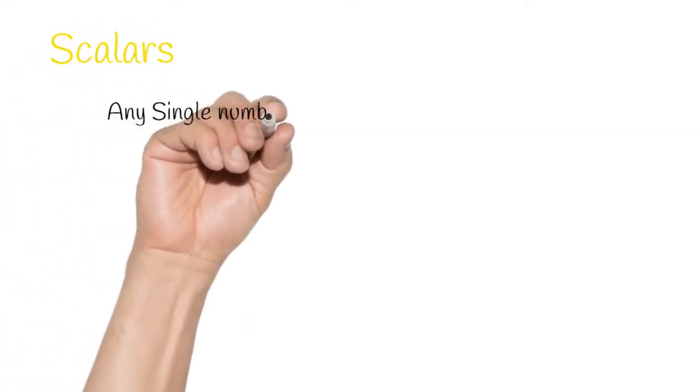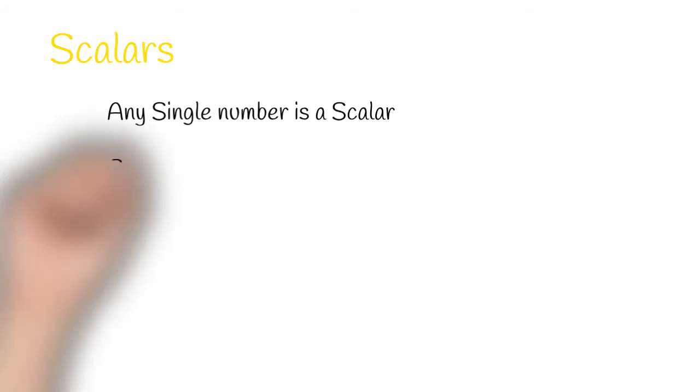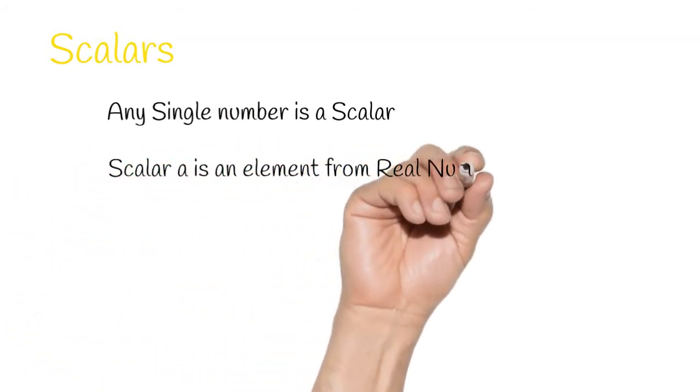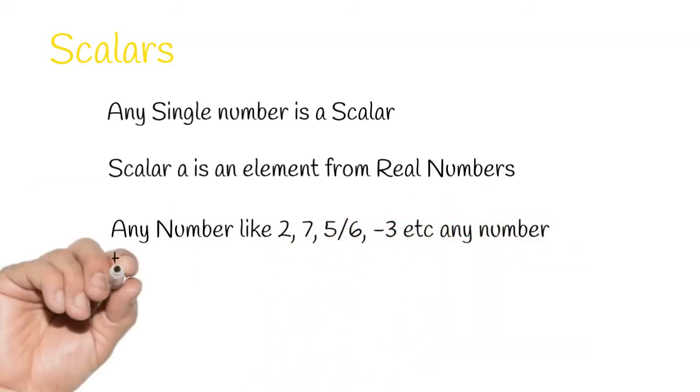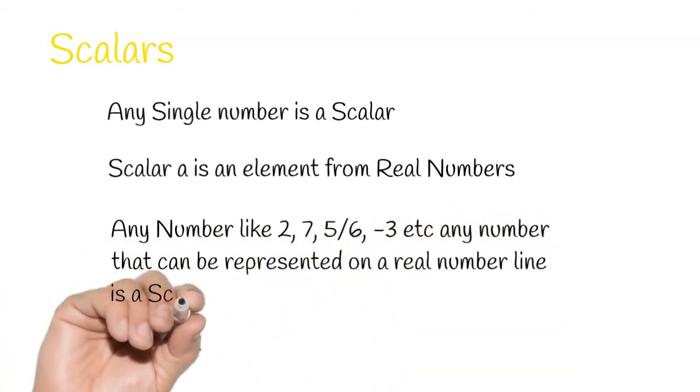Any single number is a scalar. For example, numbers that can be represented on a number line are scalar numbers like 2, 7, even fractional numbers like 5 by 6, minus 3, etc.